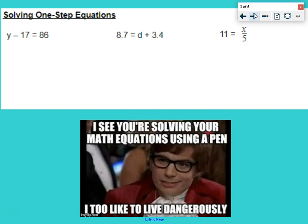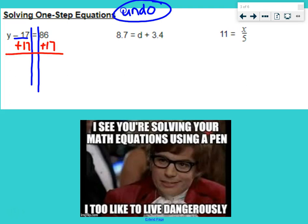Solving one-step equations. You guys should have worked on this at the end of last year. And we just want to undo the operation. We have to identify the operation, draw those railroad tracks. Right now, we have minus 17. How do we undo minus 17? Well, we undo it with the opposite, which would be plus 17. So we add 17 to both sides. We get y equals 86 plus 17 is 103.